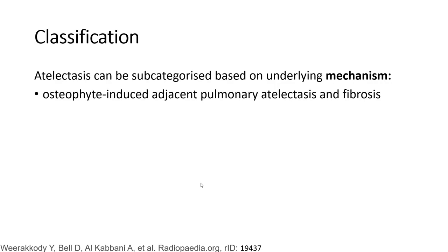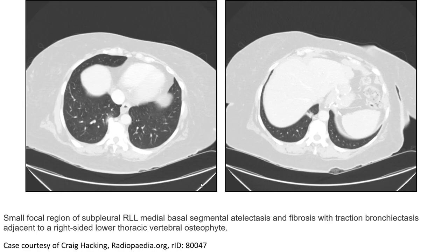This is an example of atelectasis where CT showed a small focal region of subpleural right lower lobe basal segment atelectasis and fibrosis, which structures the bronchiectasis, adjacent to a right-sided lower thoracic vertebral osteophyte.